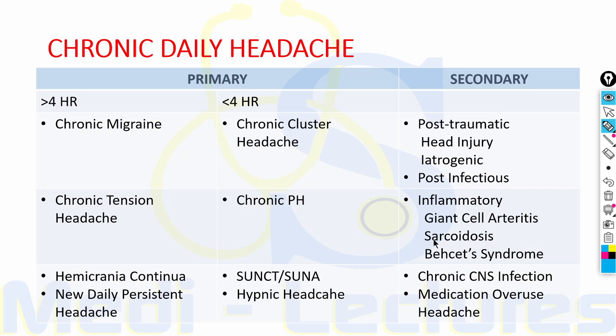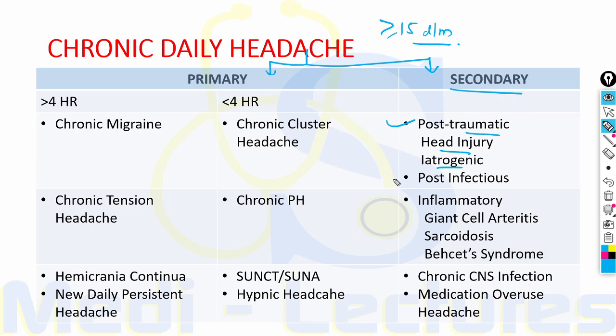Chronic daily headache can be applied when a patient experiences headache on 15 or more days per month. It is not a single entity — it encompasses a number of different headache syndromes both primary and secondary. Secondary causes include post-traumatic (head injury), iatrogenic, post-infectious, inflammatory conditions like giant cell arteritis, sarcoidosis, Behcet's syndrome, chronic CNS infection, or medication overuse headache. Medication overuse headache is due to overuse of analgesic medications, which can aggravate headache frequency, impair preventive medicines and induce refractory daily headache — so analgesic use should be reduced and eliminated.